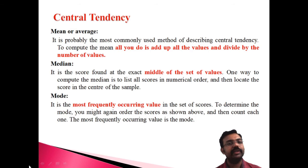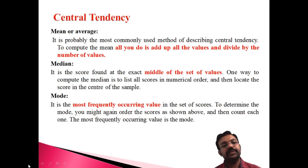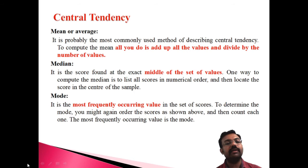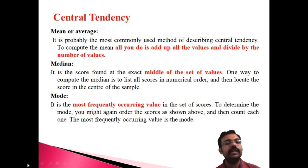The second measure is the median. The median is the middlemost value of a series. For discrete data, the median is the (n+1)/2 th item. For continuous data, the formula is L + [(n/2 − f) / F] × c. The median can be calculated for both discrete and continuous distributions.